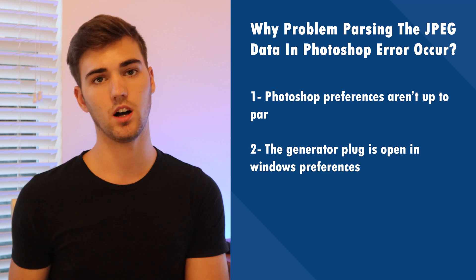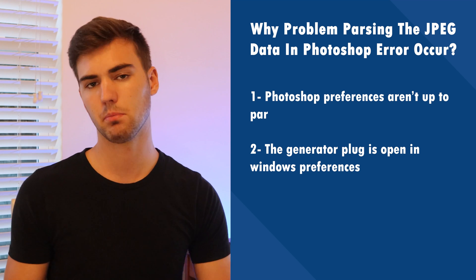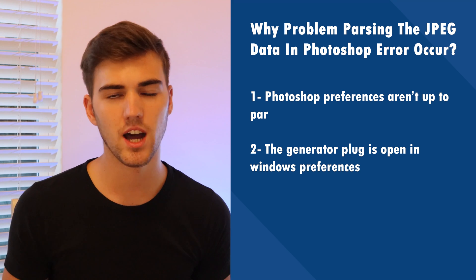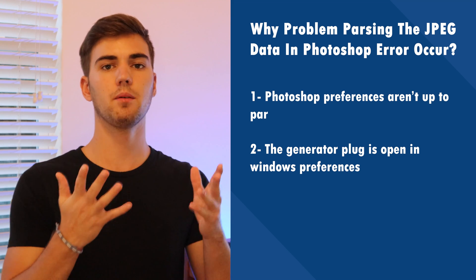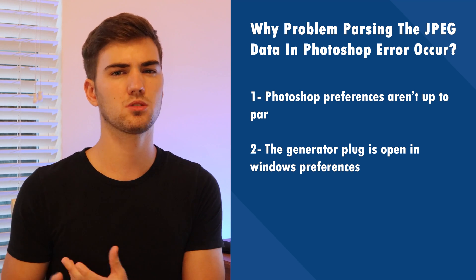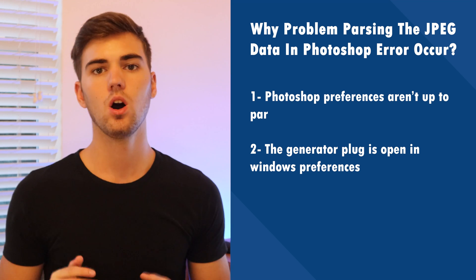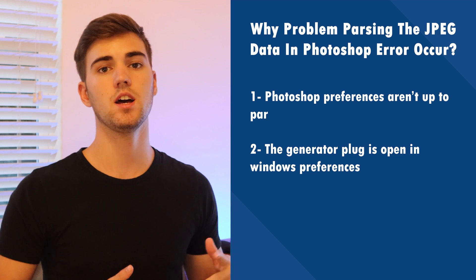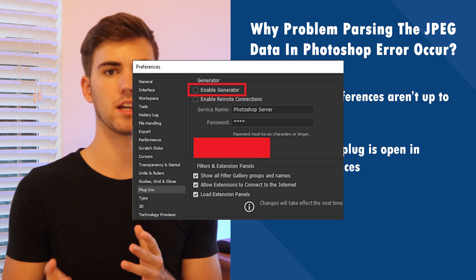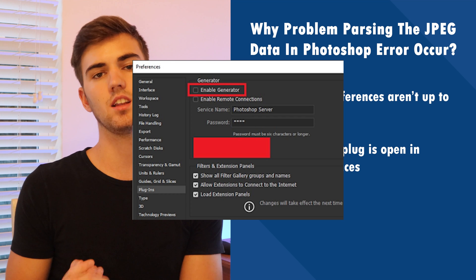Reason number two: the generator plug-in is open in Windows preferences. The generator plug-in used in Photoshop is complex and might be showing errors such as 'please close Photoshop and try once more' or Photoshop not opening. If the problem persists, make sure you uninstall some third-party plugins or just reinstall Photoshop. These could be one of the reasons why Photoshop is not opening or showing the problem parsing the JPEG data. It's always better to disable the generator by going to Preferences, then Plugins, and there you have the option to deselect the generator.